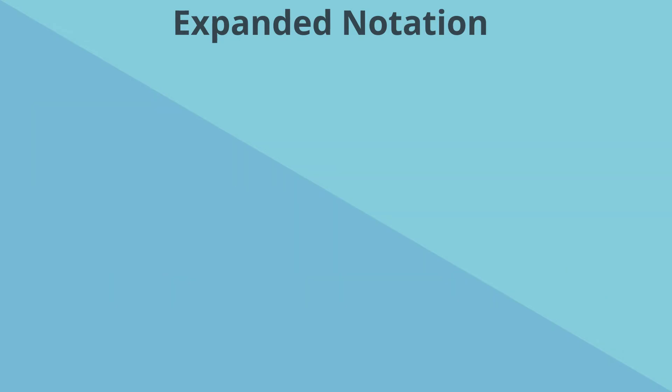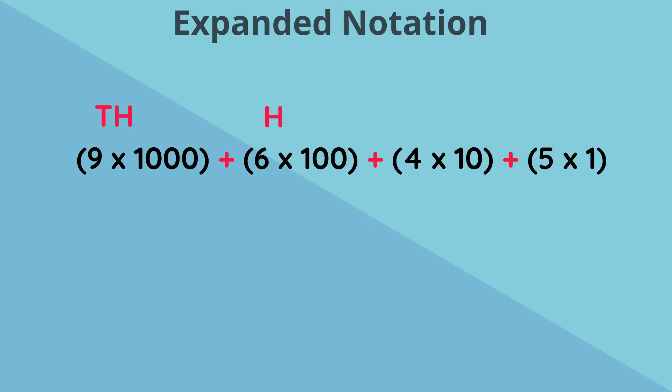Let us now switch it around. We have the following expanded notation. What can our number be? We know that 9 goes in our thousands place, 6 goes in our hundreds place, 4 goes in our tens place, and 5 goes in our ones place.